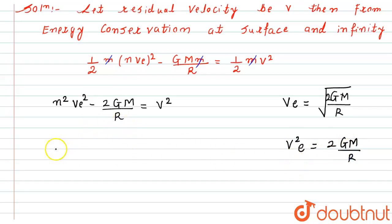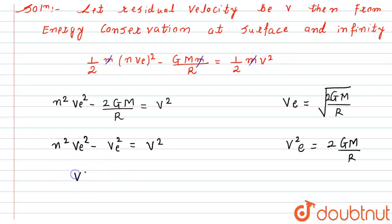This becomes: n²vₑ² minus vₑ² equals v². So v² equals (n² − 1) × vₑ².